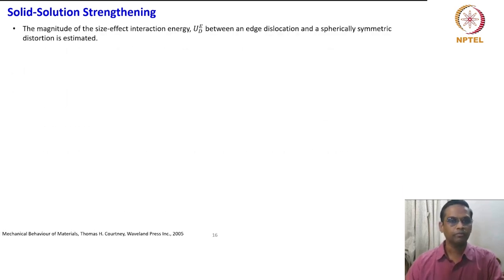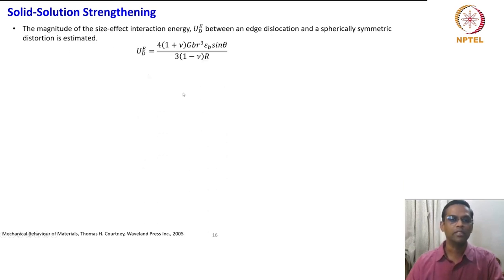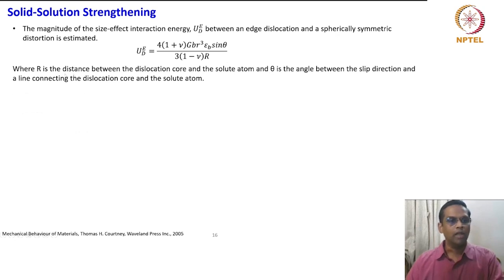If you look at the magnitude of size effect interaction energy U_Ed between the edge dislocation and the spherically symmetric distortion, it is estimated and given by this expression: U_Ed is equal to 4 into (1 plus nu) times GB or Q into epsilon_B sin(theta) divided by 3 into (1 minus nu) R, where R is the distance between the dislocation core and the solute atom and theta is the angle between the slip direction and the line connecting the dislocation core and the solute atom.